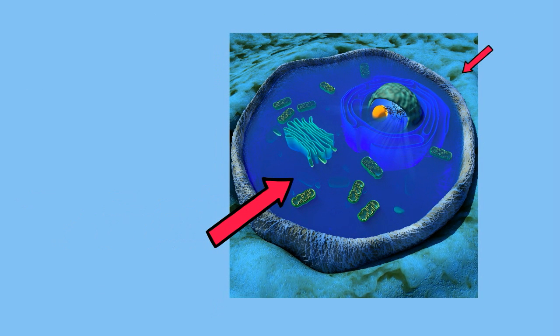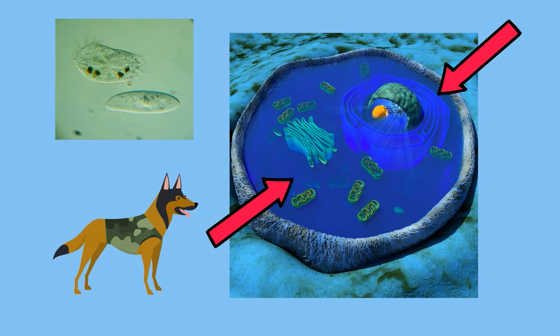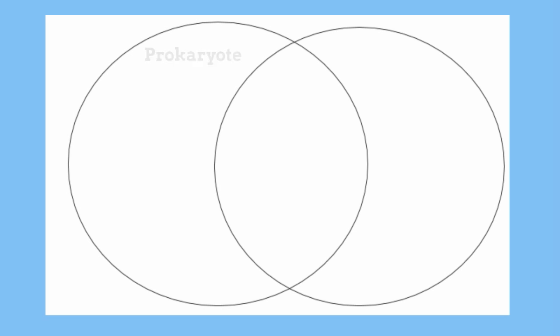On the other hand, eukaryotes contain membrane-bound organelles. You will not find a mitochondria or the Golgi apparatus in prokaryotes. Eukaryotes contain a nucleus, and they can be either a single-celled organism or a multi-celled organism.